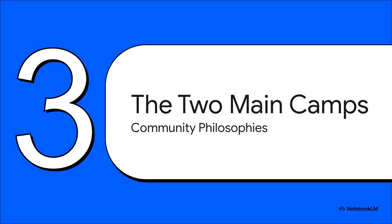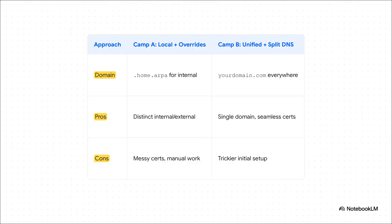Now, when it comes to actually implementing this, you'll find the community is kind of divided — it really boils down to two main philosophies, two main camps on the best way to get this done. Over in Camp A, you're using a local-only domain, something like .home or .lan, and then you manually create exceptions for the few services you want public. It keeps things separate, sure, but certificate management becomes a total nightmare. Now look at Camp B, which is where a lot of people are heading these days. You use one single, real domain for everything. A single domain means you can use a wildcard SSL certificate, and the entire certificate headache just vanishes. The logic is so much cleaner, even if it takes a little more thought to set up initially.